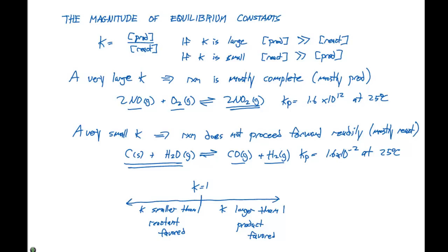And if we're around close to 1, that means there's going to be an appreciable amount of both products and reactants. So there's kind of going to be like a little range here where we can have both products and reactants.